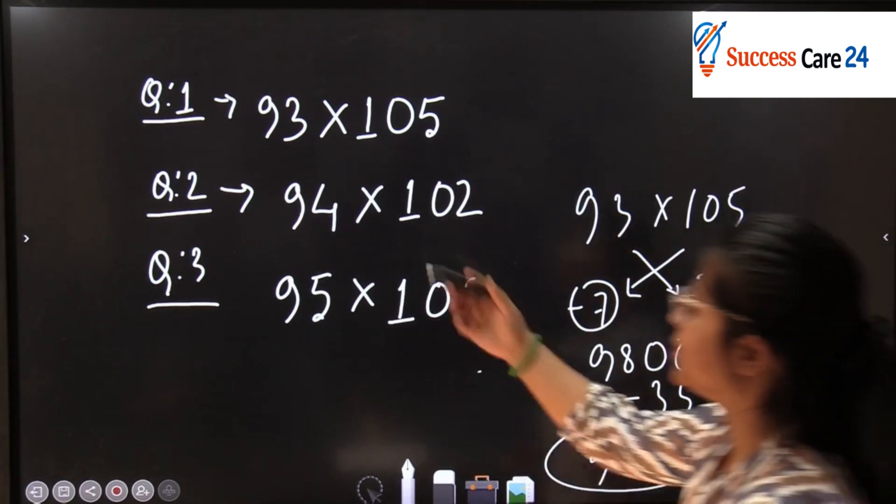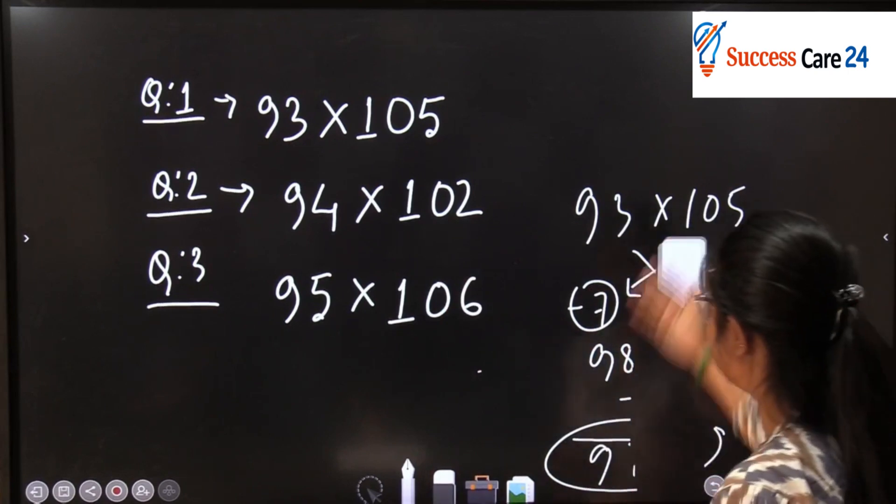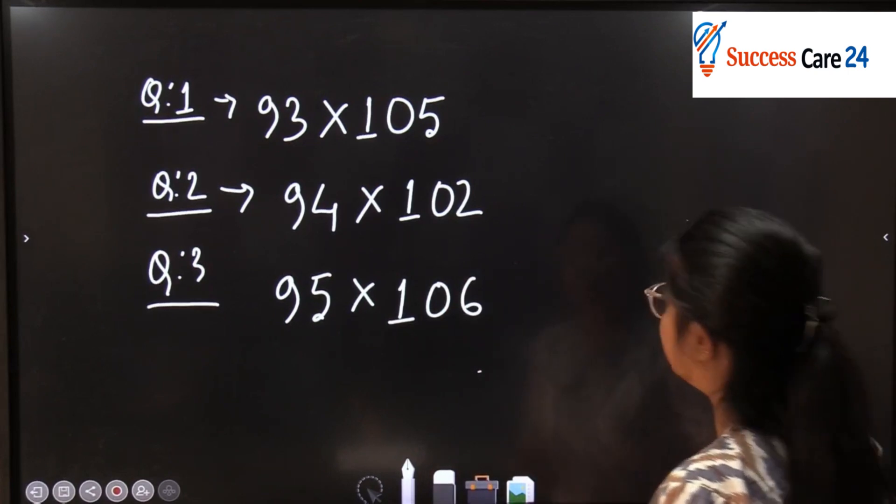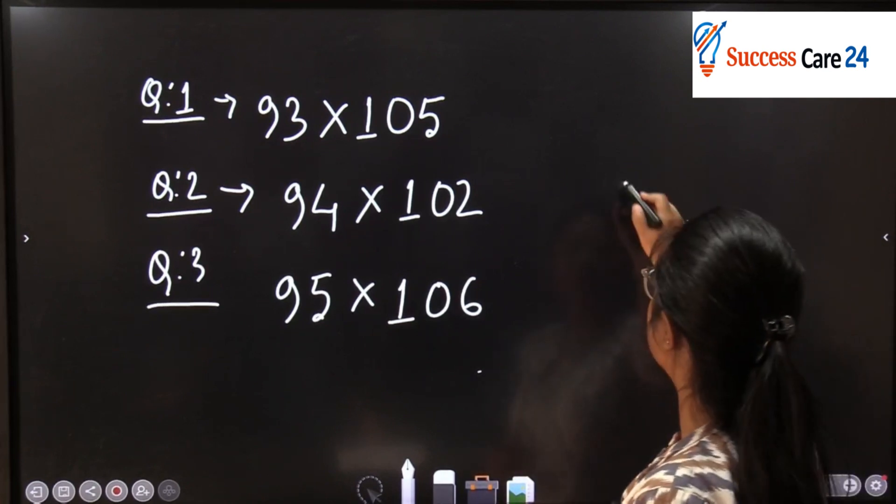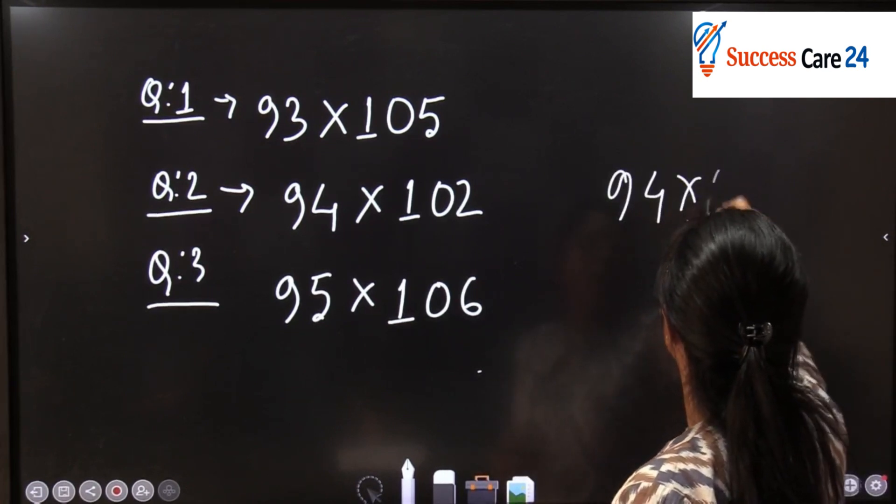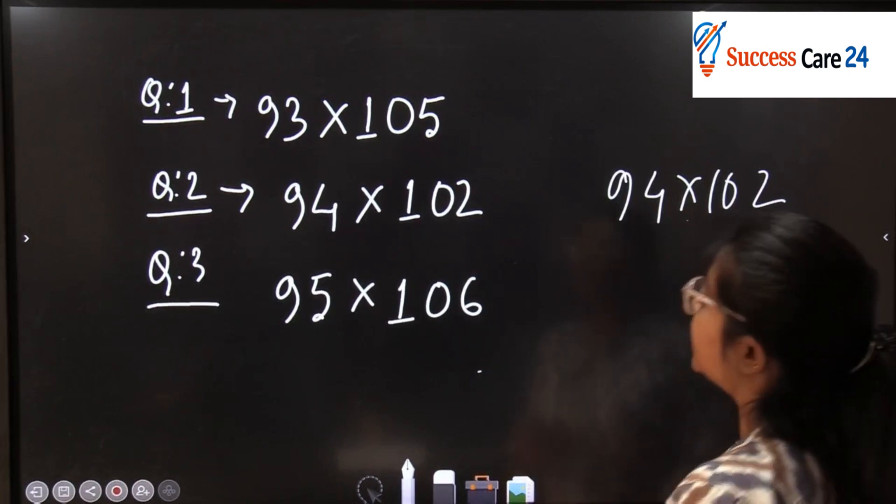So applying this we will solve the next question also. So here you are asked to find the multiplication of 94 into 102.